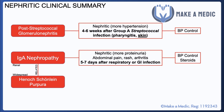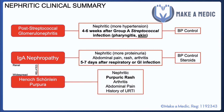Henoch-Schönlein purpura (HSP) is a condition primarily seen in children and is related to IgA nephropathy — the pathology is very much the same. However, the deposition of these immune complexes tends to be more widespread in HSP. There will be deposition in the kidneys causing nephritic syndrome, but they can also deposit within the skin, within joints, or within various blood vessels in the abdomen, resulting in the purpuric rash, arthritis, and abdominal pain.